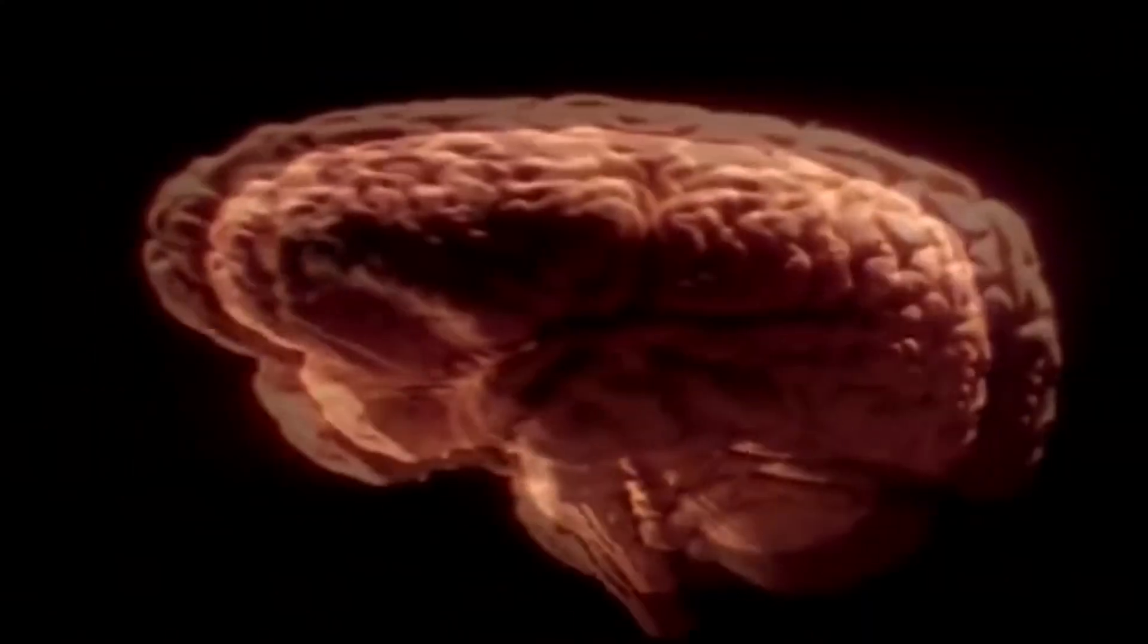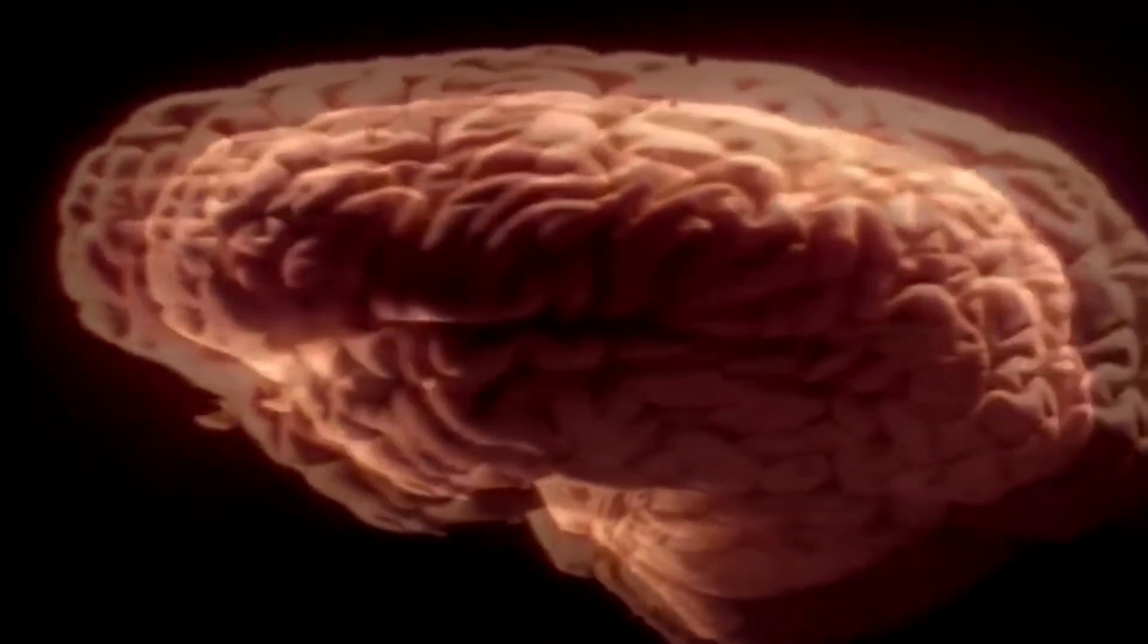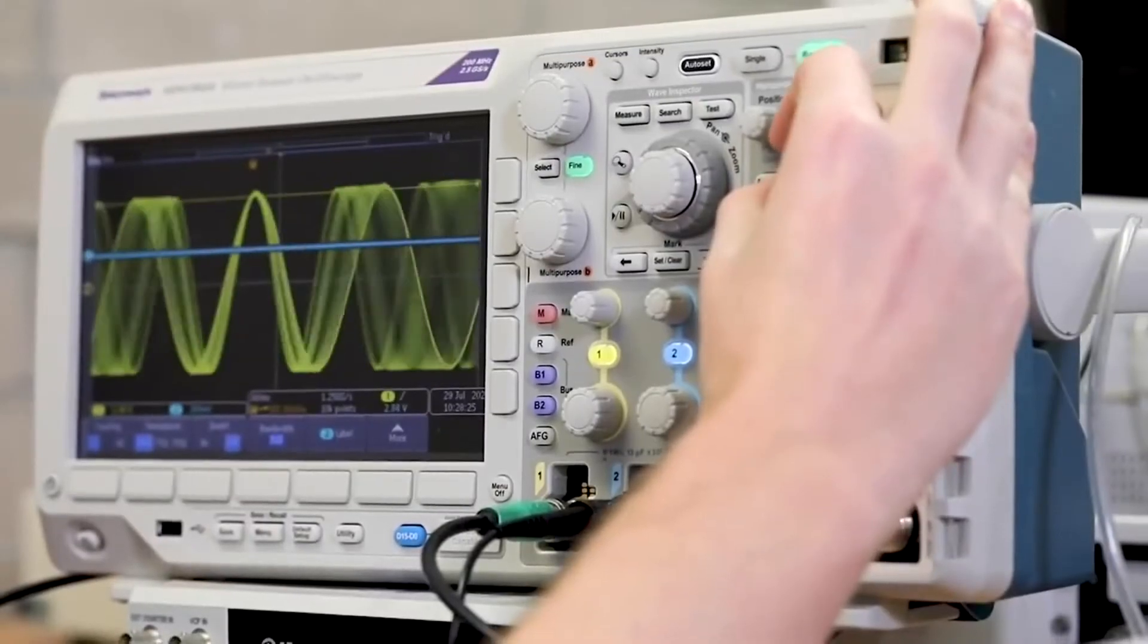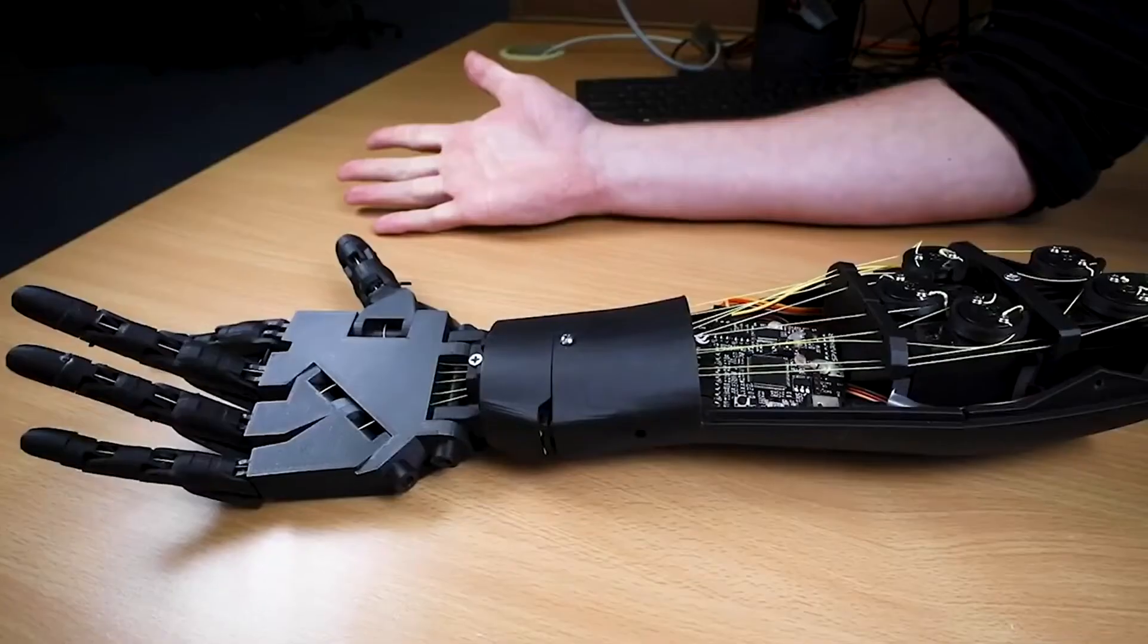Neuralink previously conducted trials of its neurotech on pigs and monkeys, including one test that involved implanting a chip into a monkey's brain, proving humans may eventually be able to use the chip to control devices with their minds.